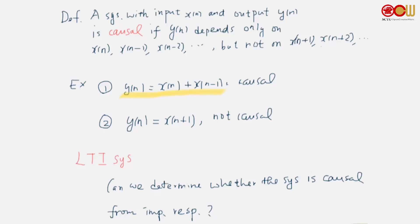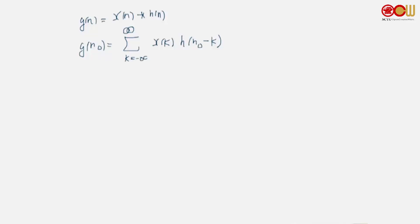Remember, we say that an LTI system is totally determined from the impulse response. So now, is it possible to determine whether the system is causal or not from the impulse response? The output is determined by the convolution. So let's look at each sample of y to see whether it depends on future samples of x. Let me write down y(n0), which is equal to this sum.